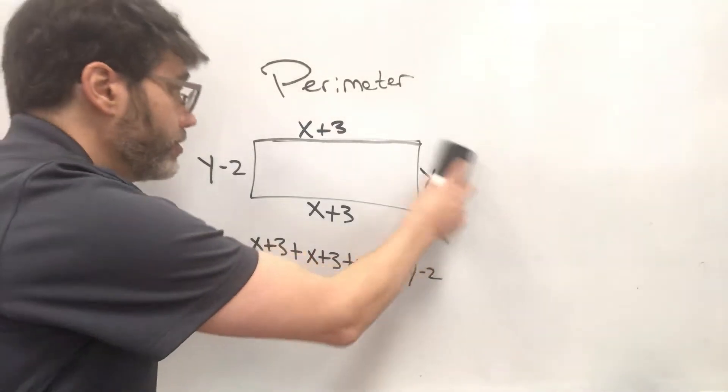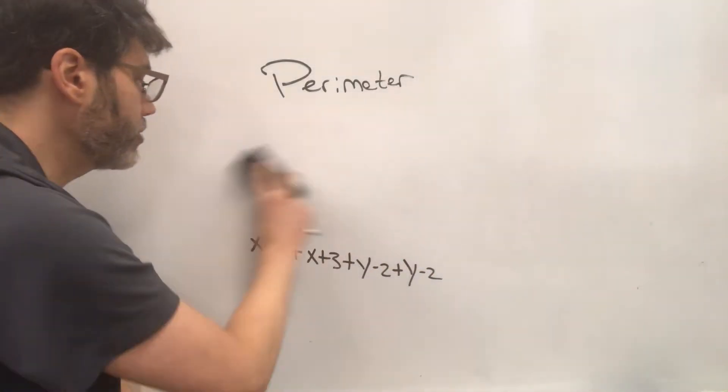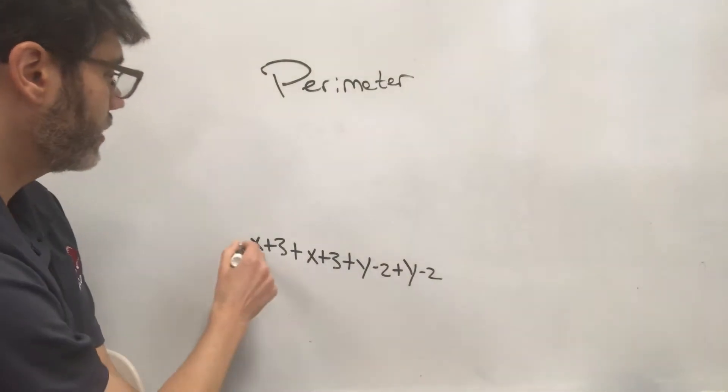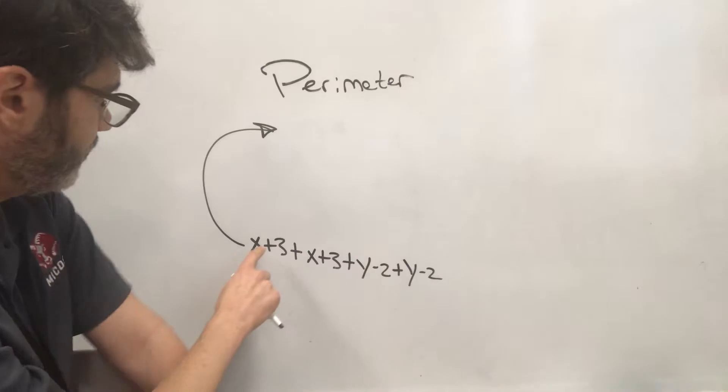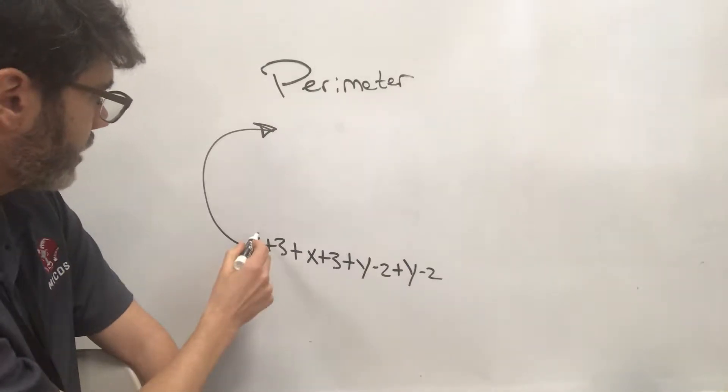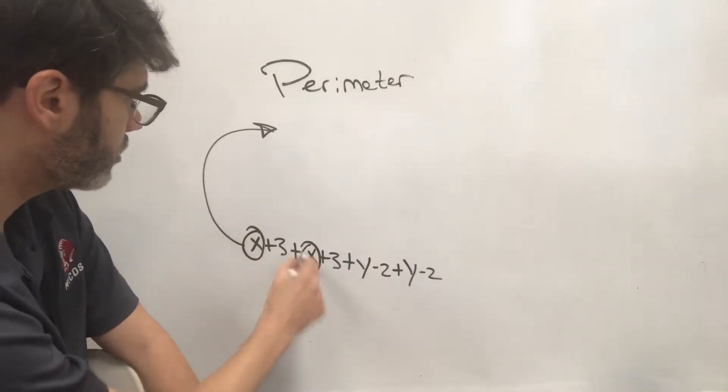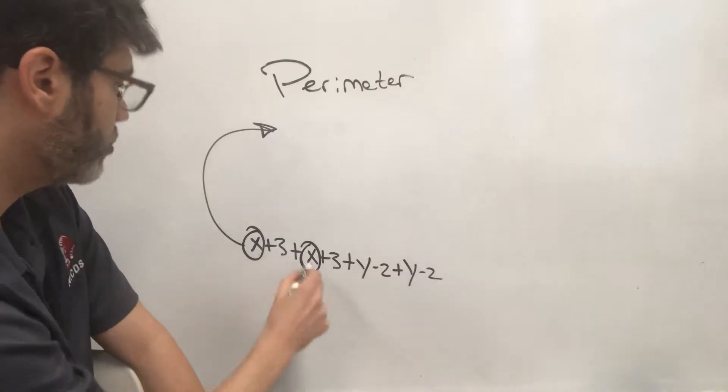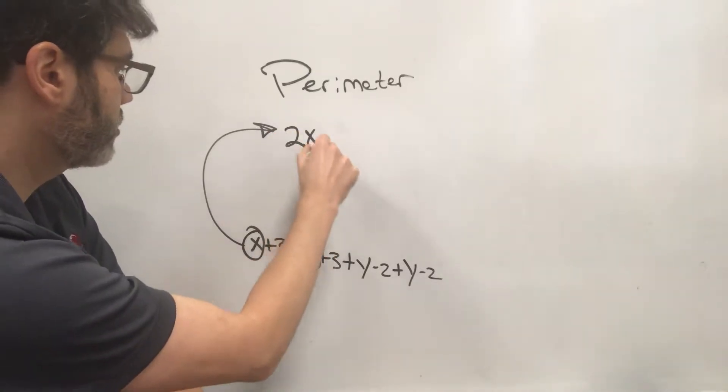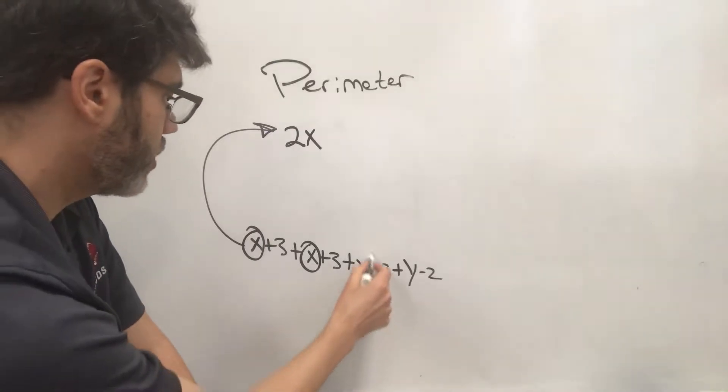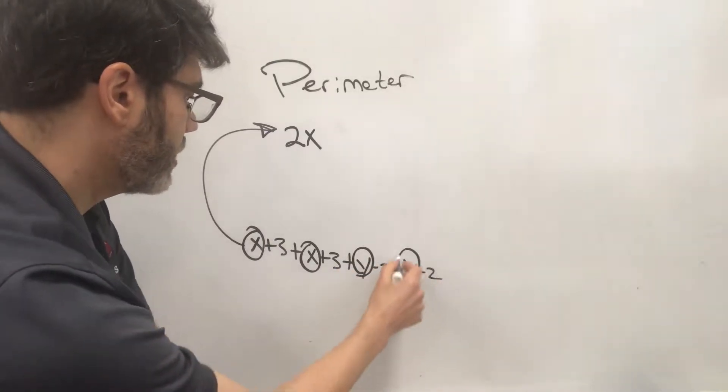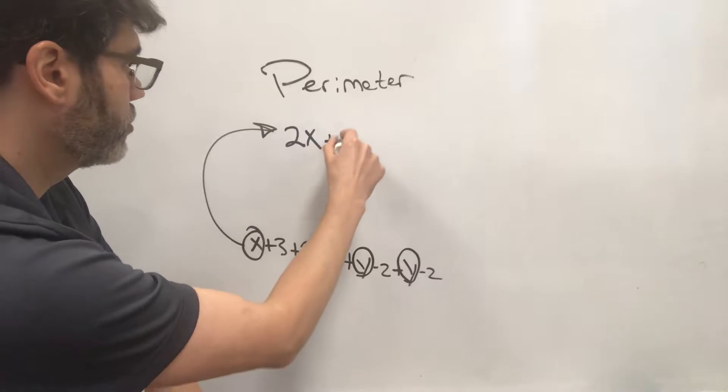And now what we need to do is combine all the like terms, and then we will bring this up here just so I have some more space. So let's gather all of the like terms. X's are all like terms here. So we have two x's. Let's gather up our y's. So here's a y, and here's a y. So that's two y's.